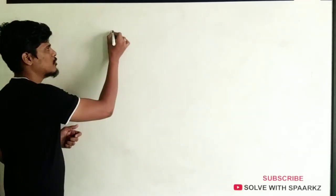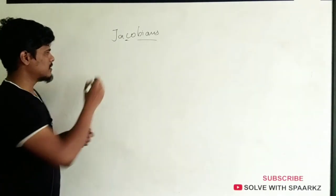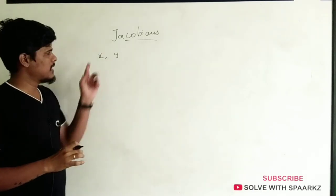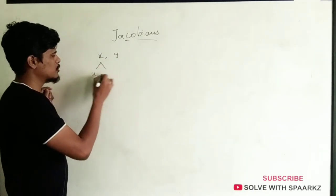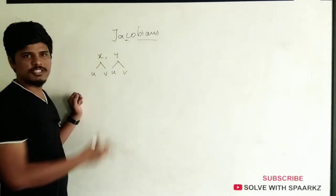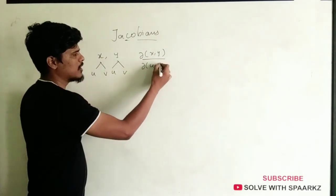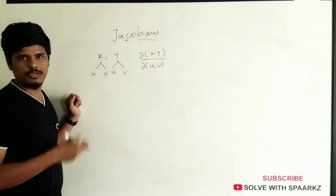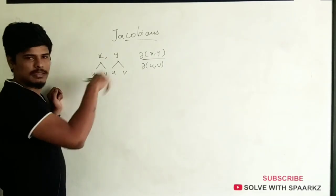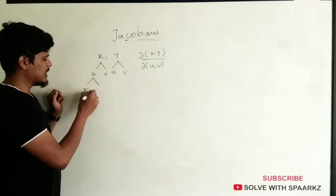In this Jacobian, we have a property. The property involves variables x, y dependent on u, v. We calculate the Jacobian — do of x, y divided by do of u, v — and evaluate it using a 2×2 matrix structure and simplify.